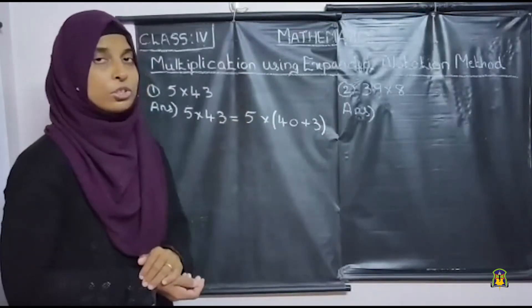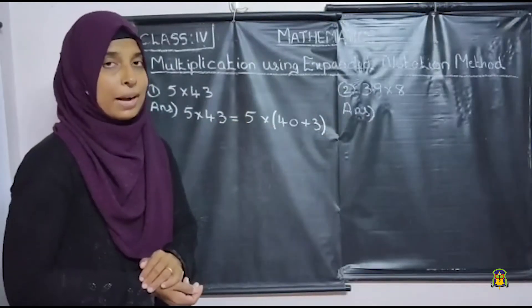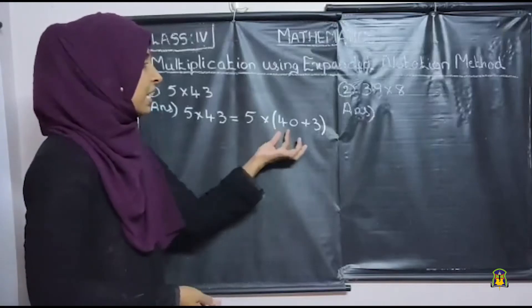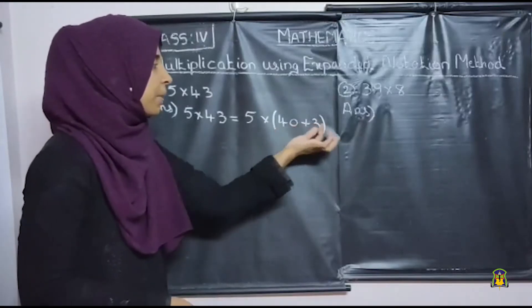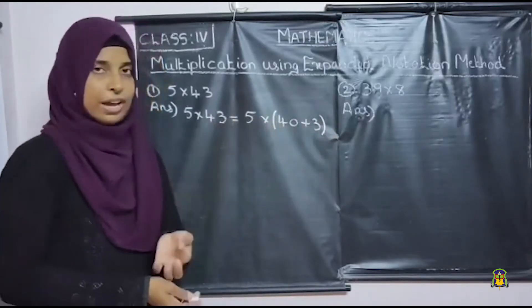So here we have 5 into 43. The expanded notation of 43 is 40 plus 3, because here 4 is in the tens place and 3 is in the ones place. So its expanded notation is 40 plus 3 — put this expanded notation inside a bracket. Then this is the first step: write 43 in the expanded notation. Next we are going to multiply each term by 5.